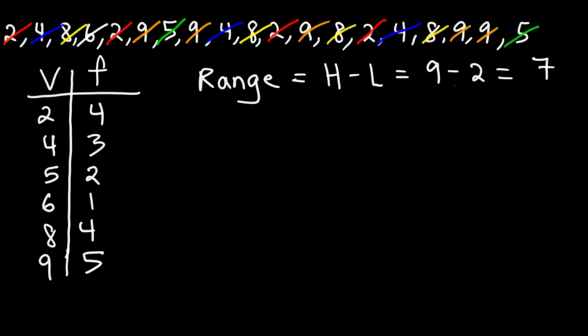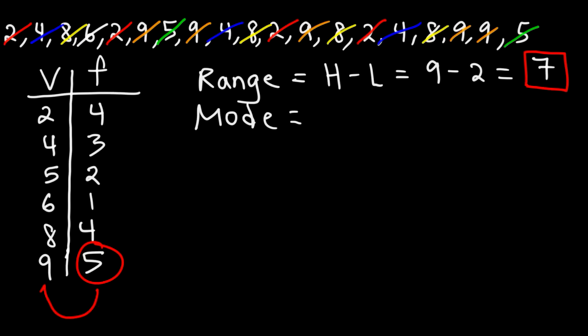Next, let's calculate the mode. As we mentioned before, the mode is the number with the highest frequency. And 5 is the highest frequency. The value that corresponds to a frequency of 5 is a 9. So the mode is 9.